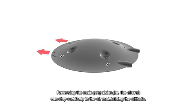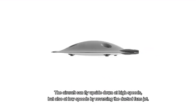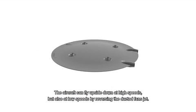Reversing the main propulsion jet, the aircraft can stop suddenly in the air maintaining altitude. The aircraft can fly upside down at high speeds but also at low speeds by reversing the ducted fans' jet.